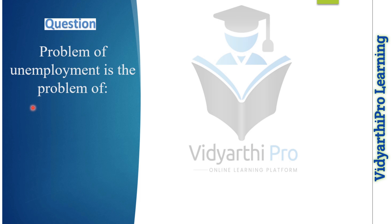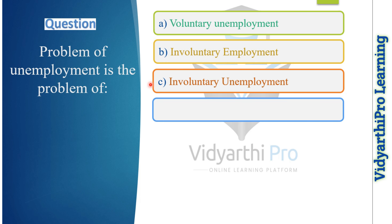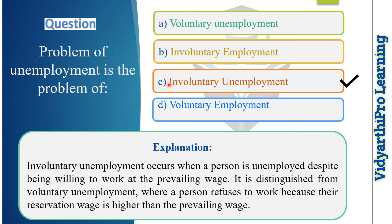Our next question: the problem of unemployment is the problem of what? Option one: voluntary unemployment. Option two: involuntary employment. Option three: involuntary unemployment. Option four: voluntary employment. The correct answer is option C, involuntary unemployment — 'anakshik berozgari' in Hindi — which occurs when a person is unemployed despite being willing to work at the prevailing wage. This is distinguished from voluntary unemployment, where a person refuses to work because their reservation wage is higher than the prevailing wage.